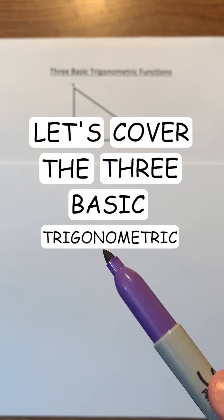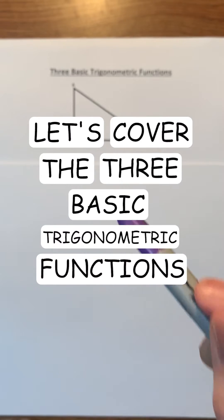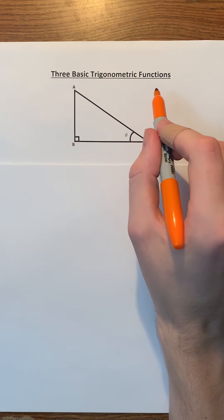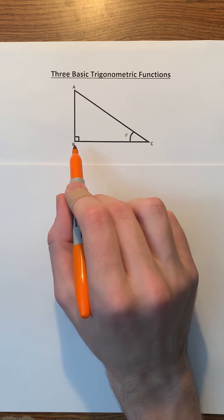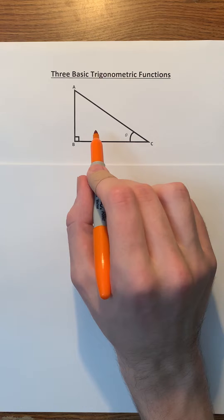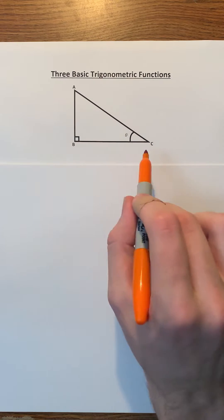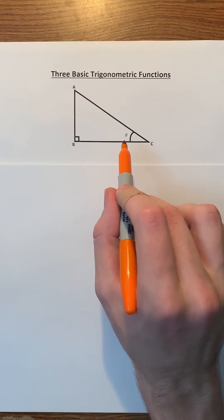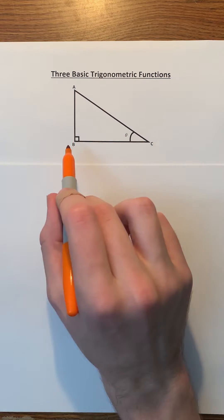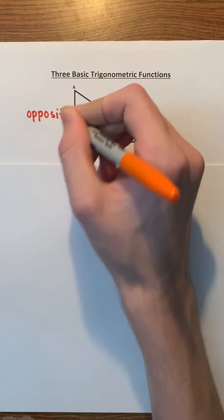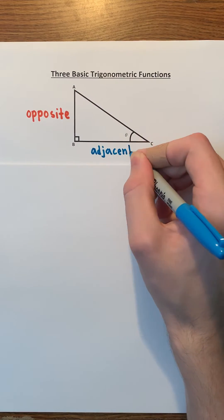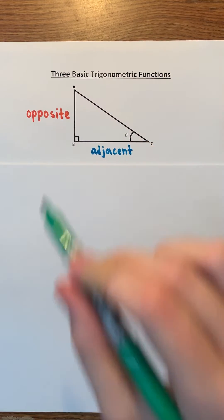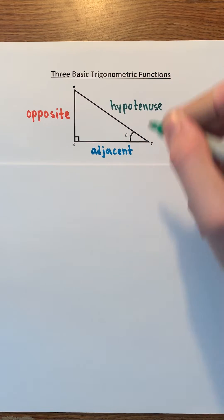Let's cover the three basic trigonometric functions. Trigonometric functions deal with right triangles. Remember that a right triangle has a 90 degree angle. In this right triangle, we have angle ACB with a measure of theta. Side AB must be opposite this angle, and side BC must be adjacent to it. This final side is called the hypotenuse.